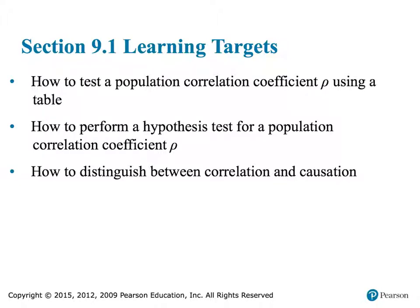This is the second of two videos for Lesson 9-1, a continuation of Video 1. The learning targets we want to hit in this video are: first, how to test a population correlation coefficient rho using a table; second, how to perform a hypothesis test for a population correlation coefficient rho; and third, how to distinguish between correlation and causation.